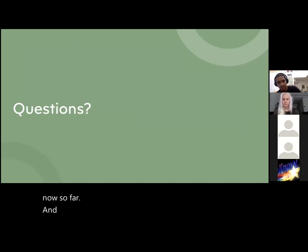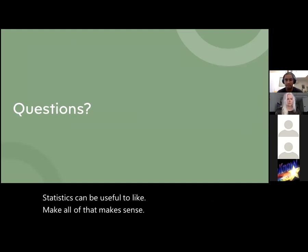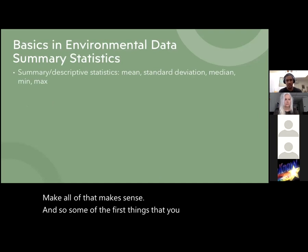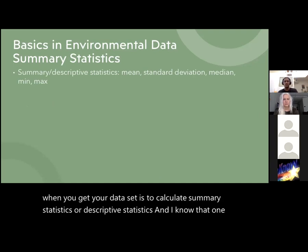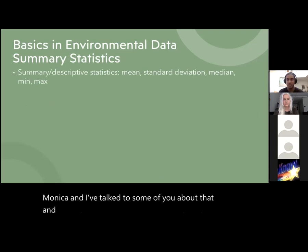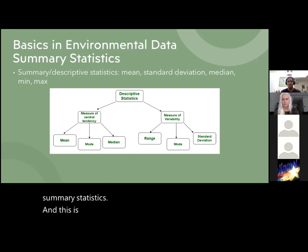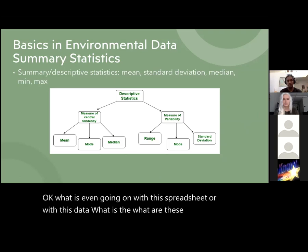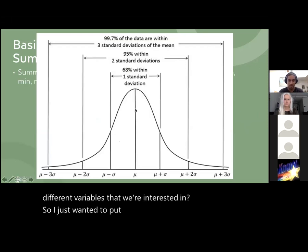Because things are complicated, statistics can be useful to make all of that make sense. One of the first things you do when you get your dataset is calculate summary statistics or descriptive statistics — often a mean or average, standard deviation, et cetera. These are some examples of other summary statistics. This is the first step to get a sense of: what is even going on with this data? What are the summaries by different variables we're interested in?